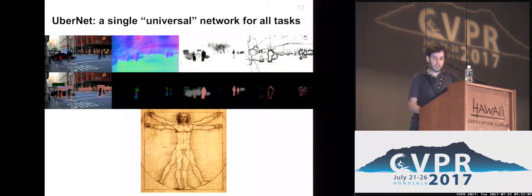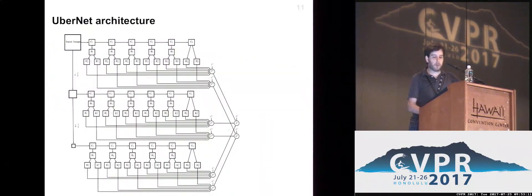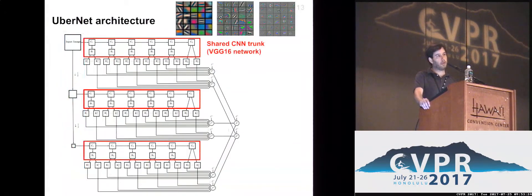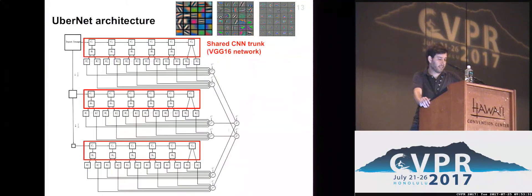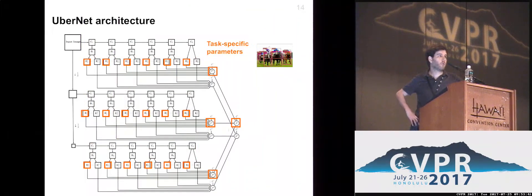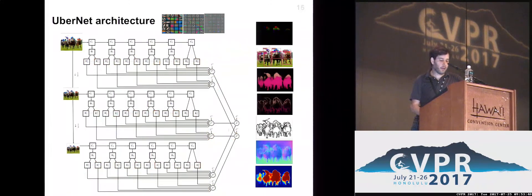The architecture itself is pretty straightforward. We take our image and construct an image pyramid out of it, so we have observations at multiple resolutions. Each of those images is passed through a set of networks with tied weights — in all the results in this work I'm relying on the VGG network — giving us a feature hierarchy. Then we have task-specific parameters which take these intermediate representations and modify them to give task-specific responses, whether that is object detection, semantic segmentation, or any other of the tasks we're trying to solve. This entire architecture is trained end-to-end to jointly optimize performance across all tasks.